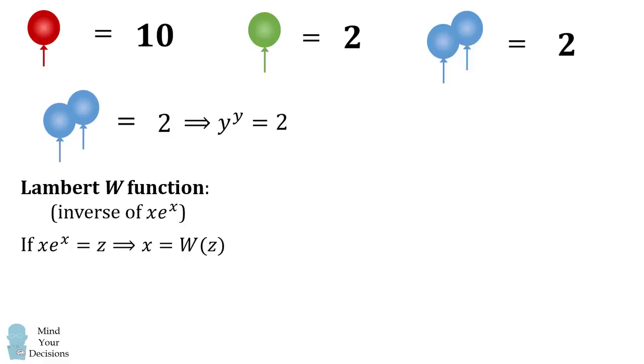So how does that help us solve the equation Y to the power of Y is equal to 2? Well, the first thing we'll do is we'll rewrite the equation. It can be rewritten as E to the power of ln Y raised to the power of E to the power of ln Y. This is because E to the power of ln Y is equal to Y. Now we'll use exponentiation rules to simplify this as E raised to the power of ln Y times E raised to the power of ln Y.